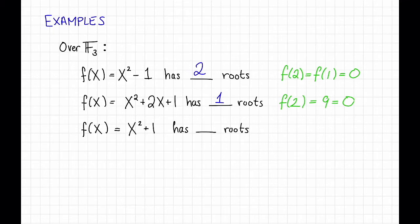And f(x) = x^2 + 1 has 0 roots. To see that, we can just check that f(0) = 1, f(1) = 2, and f(2) = 5, which equals 2 mod 3. In particular, these examples show that while degree 2 polynomials in this case have at most two roots, they might have fewer than two roots.